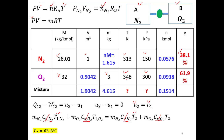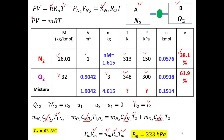The individual components had different temperatures before mixing, but the mixture reaches T2 = 63.6°C. Now we can find the mixture pressure using Pm × Vm = Nm × Ru × Tm. We know the mixture temperature, universal gas constant, number of moles, and volume. The only unknown is Pm, which equals 223 kPa.